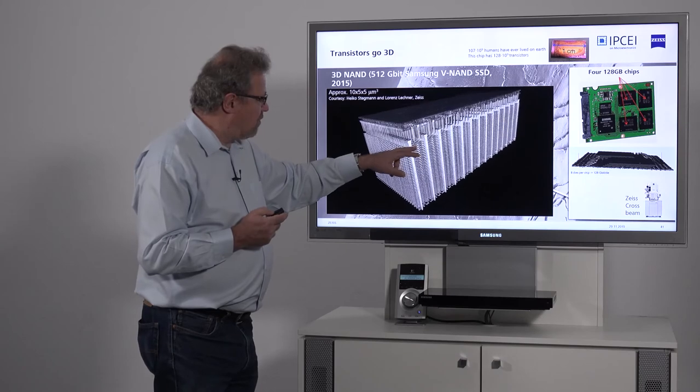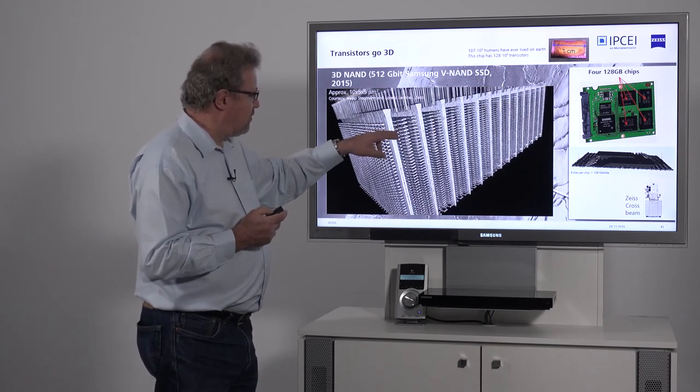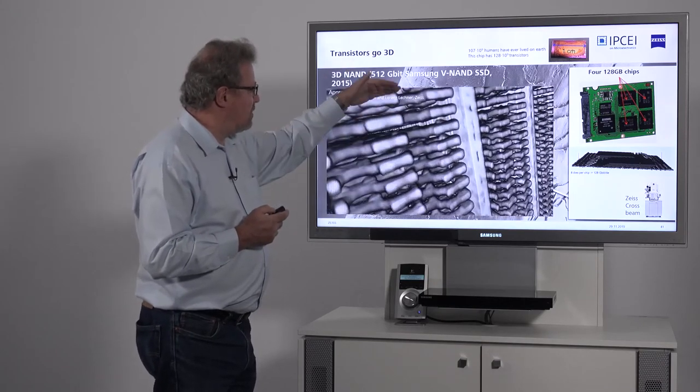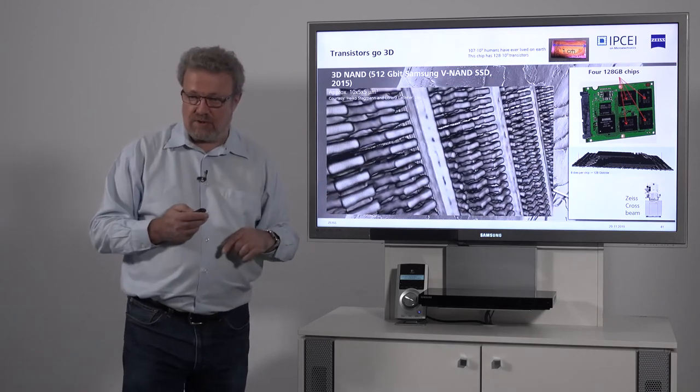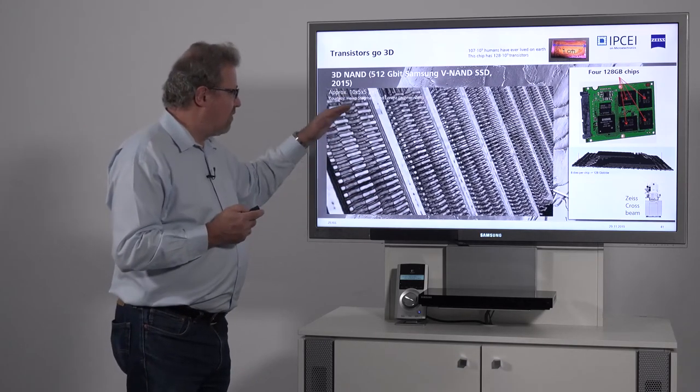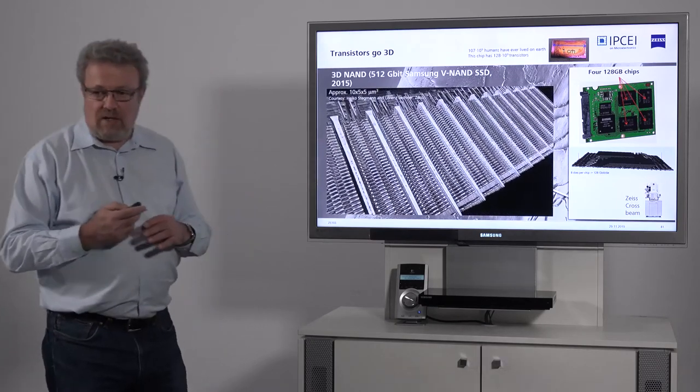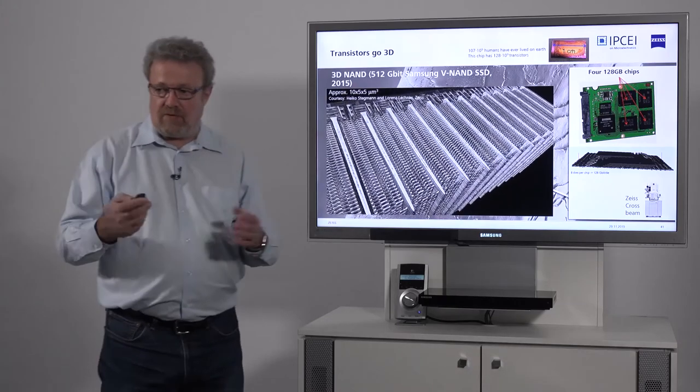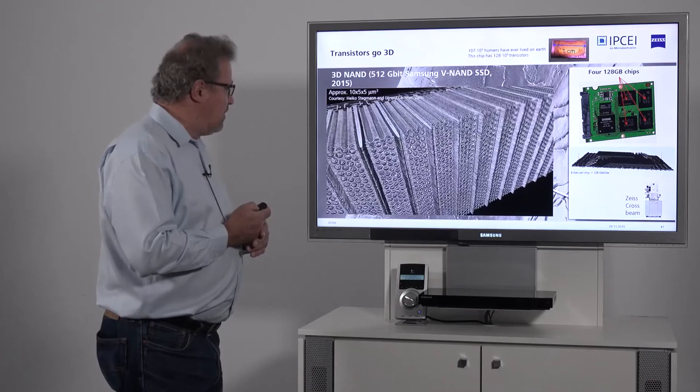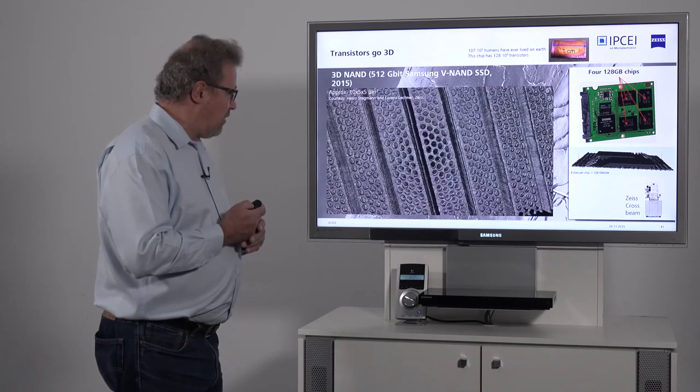And here, of course, you only, this is thresholded, so the chip, of course, is full with material, but here you only see the metal. Each intersection of this column with any of those layers is one transistor that can store one bit. So those people have already gone and stacked transistors in 3D, and there is a continuous effort to do this also for logic and other memory devices. So this is an additional way to increase transistor density per area.